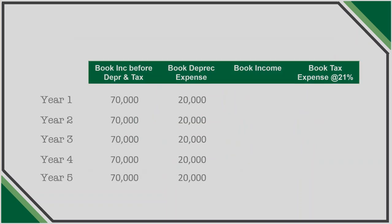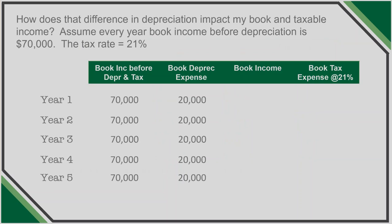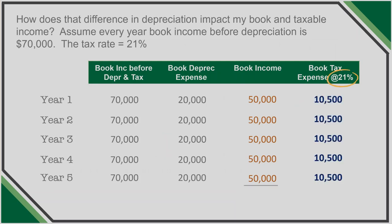Let's look at how the various depreciation rules impact our book income and book tax calculation. If we assume this company has book income before depreciation and tax of $70,000 in years one through five, then book income after depreciation will be $50,000 a year. Assuming a statutory tax rate of 21%, the total tax expense each year associated with book income should be $10,500.